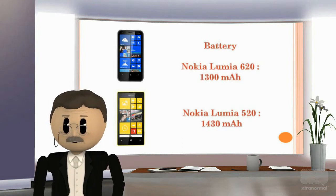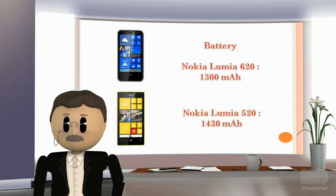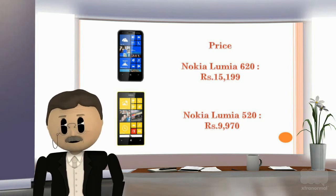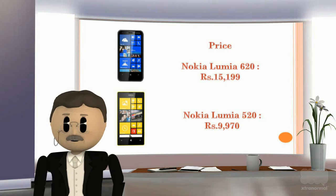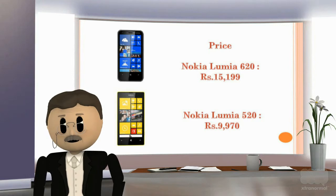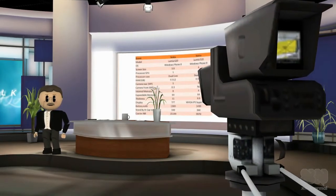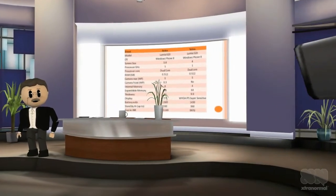Battery of Nokia Lumia 620 is 1300 mAh and battery of Nokia Lumia 520 is 1430 mAh. Price of Nokia Lumia 620 is Rs. 15,199 and price of Nokia Lumia 520 is Rs. 9,970. Overview specifications of Nokia Lumia 620 and Nokia Lumia 520.